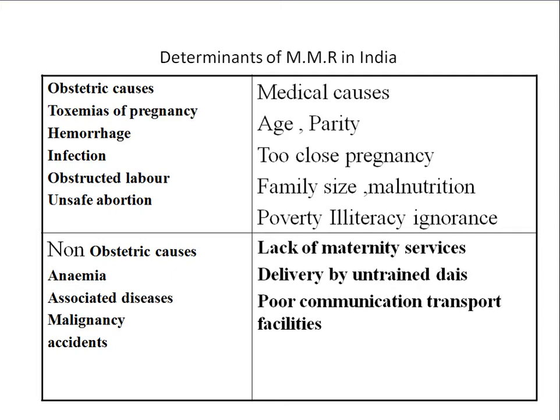Poverty leads to malnutrition, which leads to anemia, which leads to mortality. Illiteracy and ignorance are also important factors — studies show that highly educated mothers have lower mortality rates, while low-educated mothers have higher rates. Lack of maternity services is another cause.